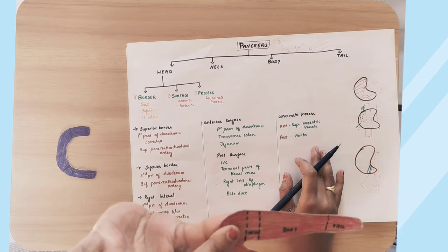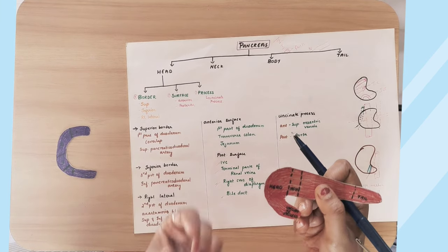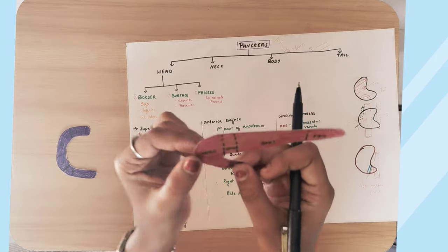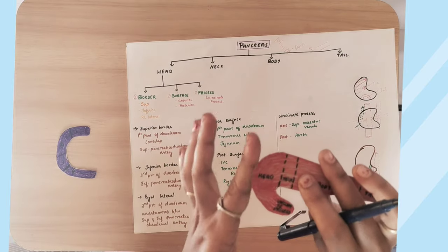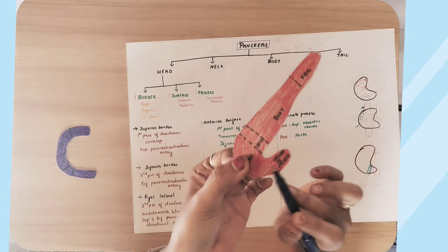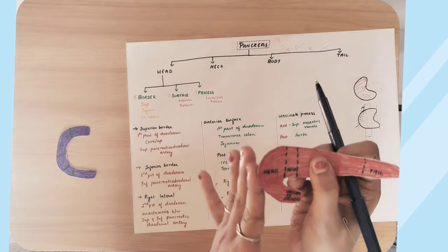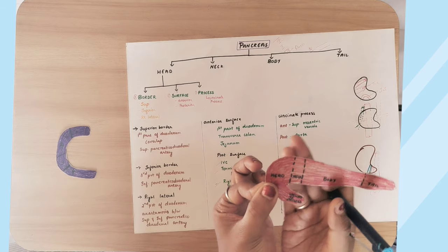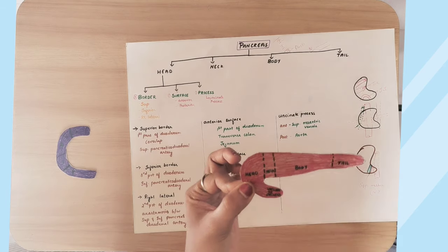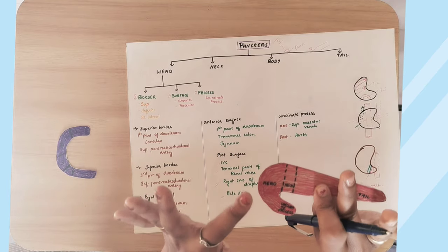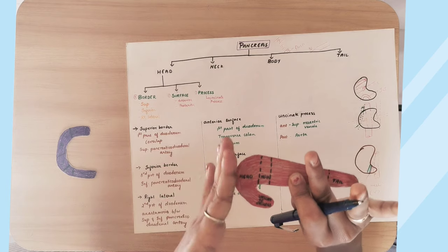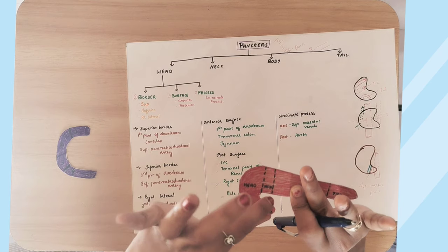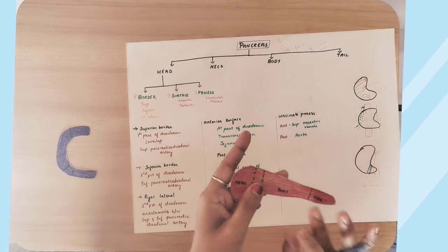The head of the pancreas has three borders: superior border, inferior border, and right lateral border. It also has two surfaces — anterior and posterior — and one process called the uncinate process.